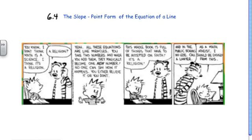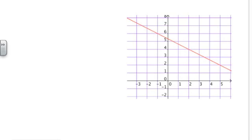The topic of today's lesson is the slope-point form of the equation of the line. I'd like you to start by writing the equation of this line using the slope y-intercept form: y is equal to mx plus b.